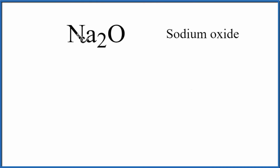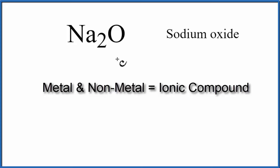In this video, we'll write the Lewis structure for Na2O, sodium oxide. So sodium is a metal and oxygen is a non-metal. That means we have an ionic compound.